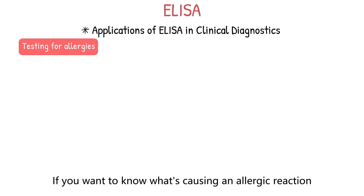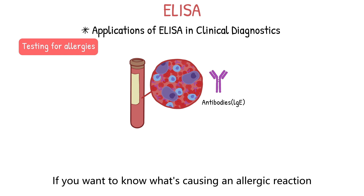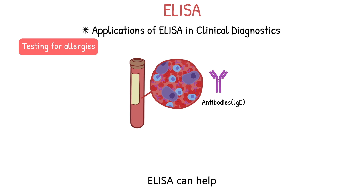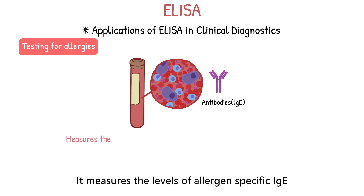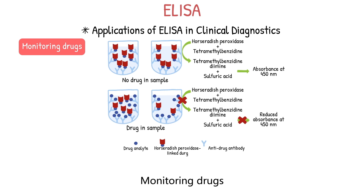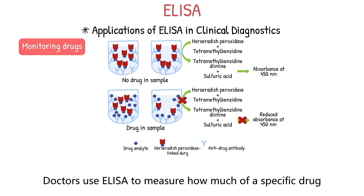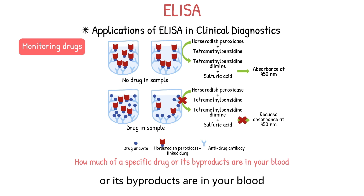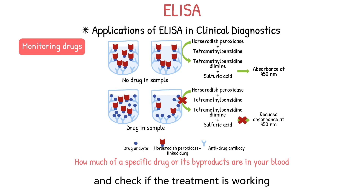A second application is allergy testing. If you want to know what's causing an allergic reaction, ELISA can help by measuring the levels of allergen-specific IgE antibodies in your blood. Third, in monitoring drugs, doctors use ELISA to measure how much of a specific drug or its byproducts are in your blood, helping find the right dosage and check if the treatment is working.